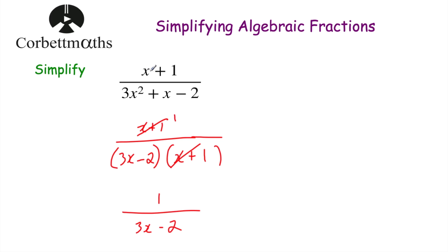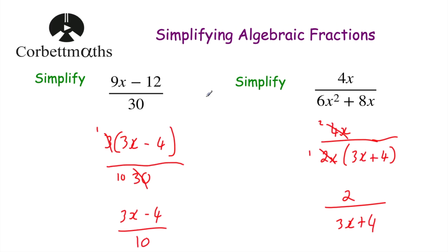We have x plus 1 on both the numerator and denominator, so we cancel them. The numerator becomes 1, and we're left with 1 over 3x minus 2. So simplifying x plus 1 over 3x squared plus x minus 2 gives 1 over 3x minus 2. In this video we've recapped how to simplify algebraic fractions for GCSE Further Maths — a useful skill both as a standalone topic and within other topics.